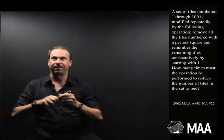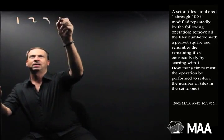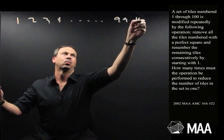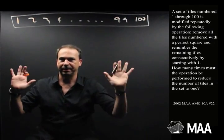A set of tiles are numbered 1 through 100. That's fine. So we've got tiles numbered 1, 2, 3, 4, and so on, 99, 100. Set of tiles numbered like that.